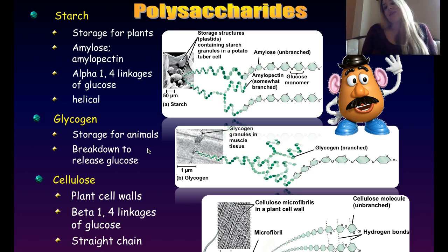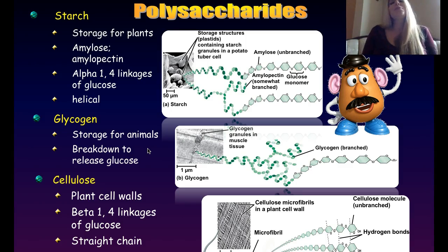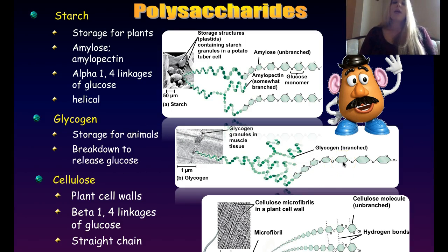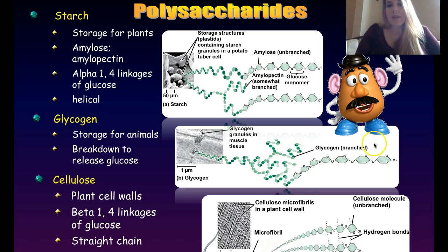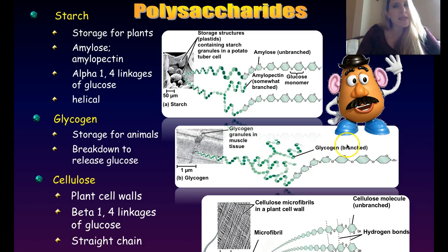Glycogen is the storage polysaccharide for animals. It's found in the liver — when your blood sugar gets low, your pancreas signals the liver to break down glycogen, releasing glucose into the bloodstream and raising blood sugar. Glycogen is also made of glucose chains, but compared to starch it has much more branching in its overall structure. You can also store glycogen in your muscle cells.